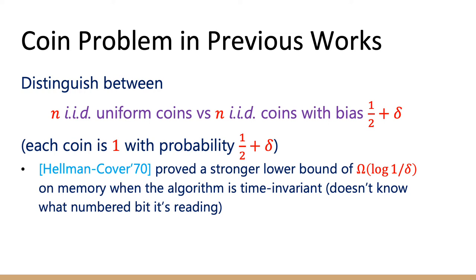Another relevant result: Hellman and Cover (1970) proved a stronger lower bound of Ω(log(1/δ)) on memory when the algorithm is time-invariant. Any time-invariant algorithm requires Ω(log(1/δ)) memory to distinguish uniform coins from coins with bias half plus delta. We want to prove lower bounds even for algorithms that are allowed to depend on the time step — that is, algorithms whose transition function can vary with time — without needing to store the time step in memory.